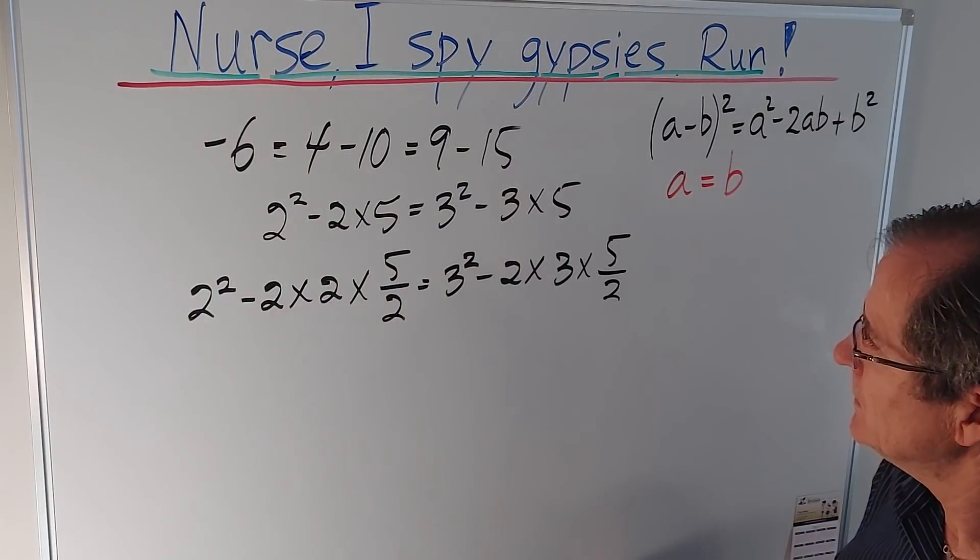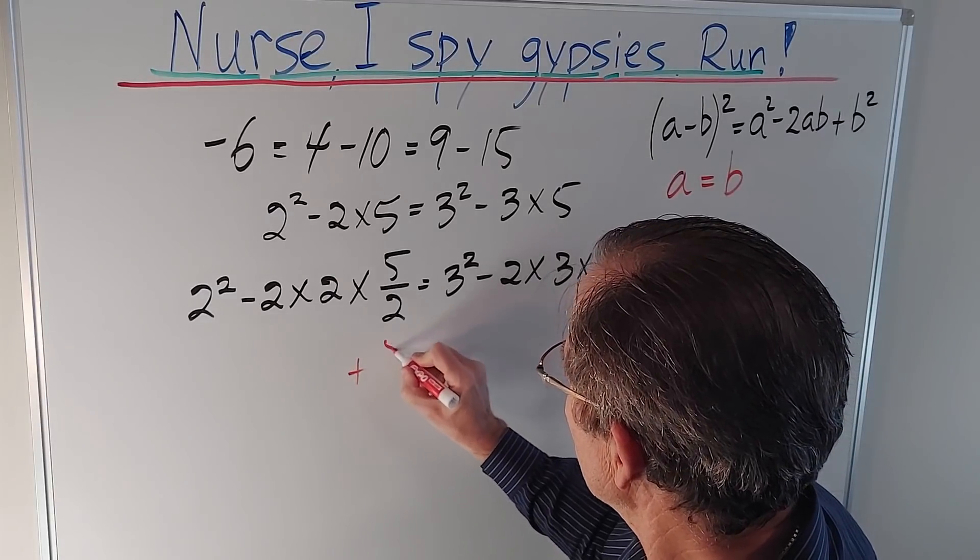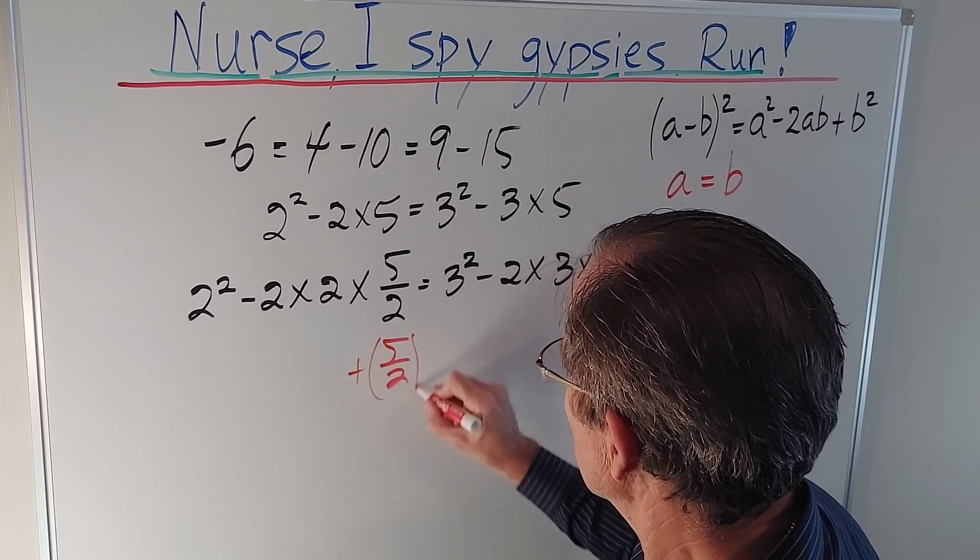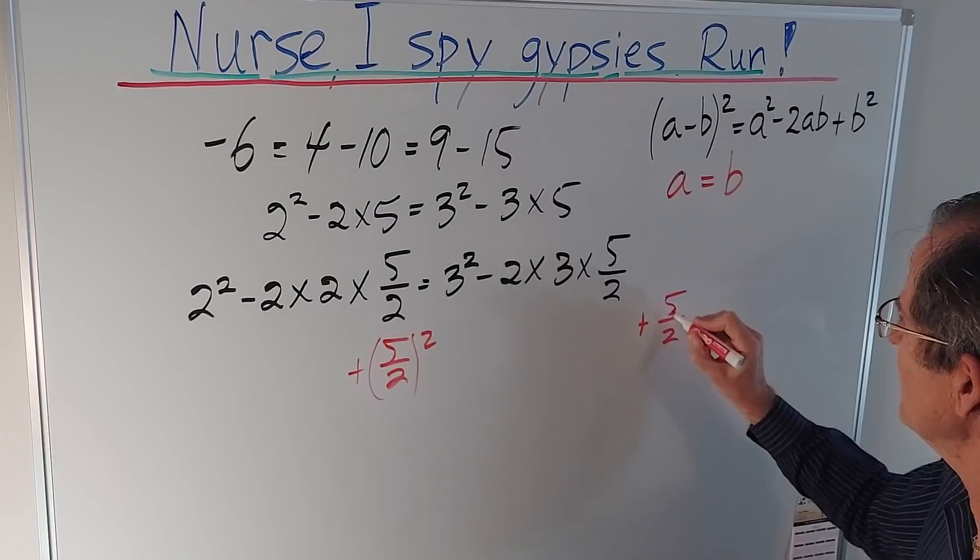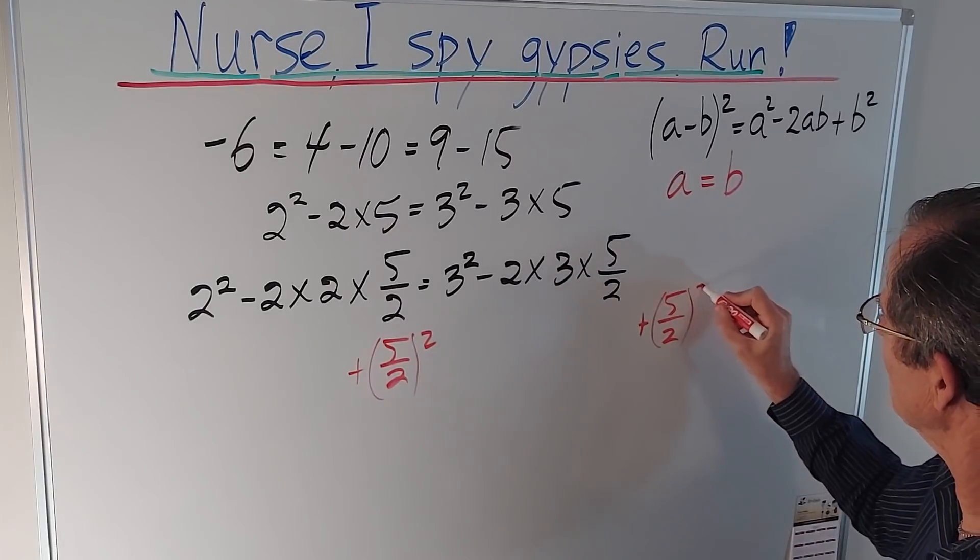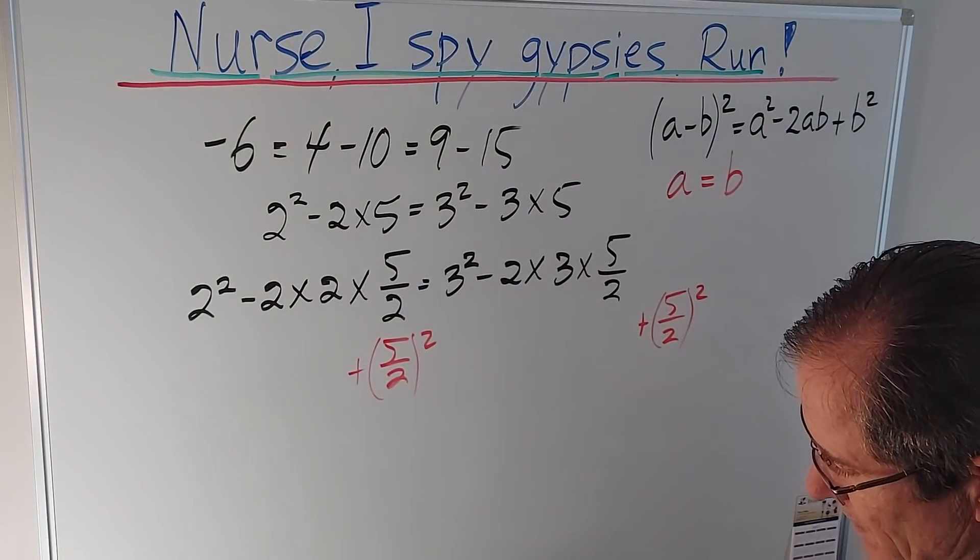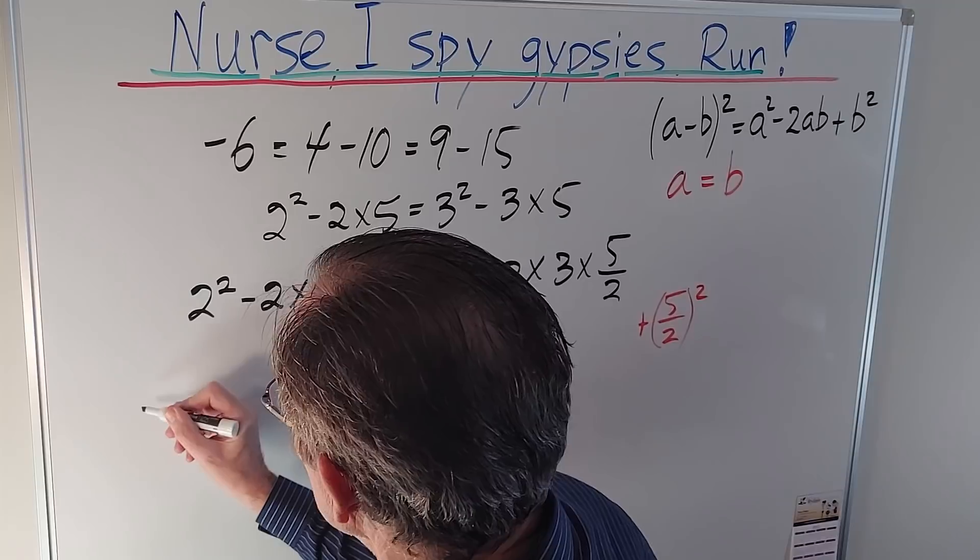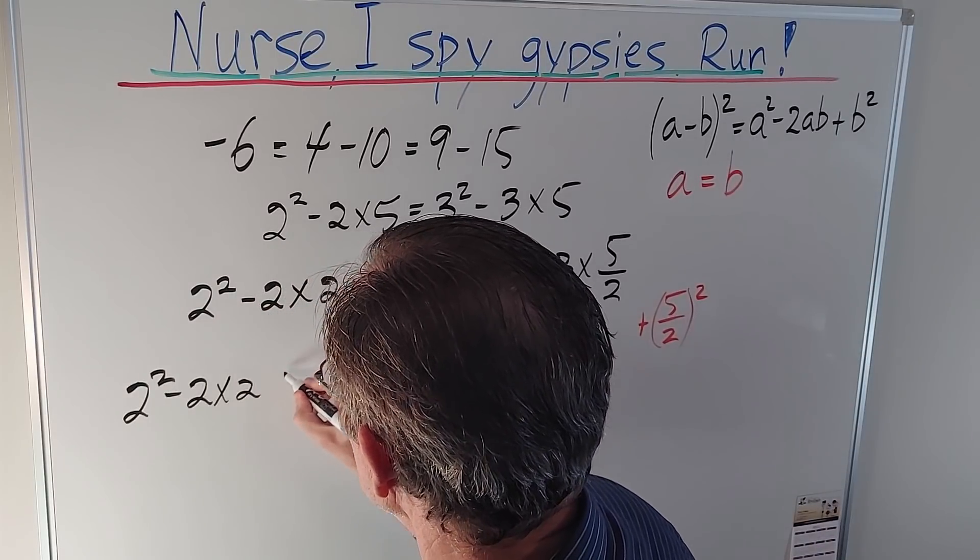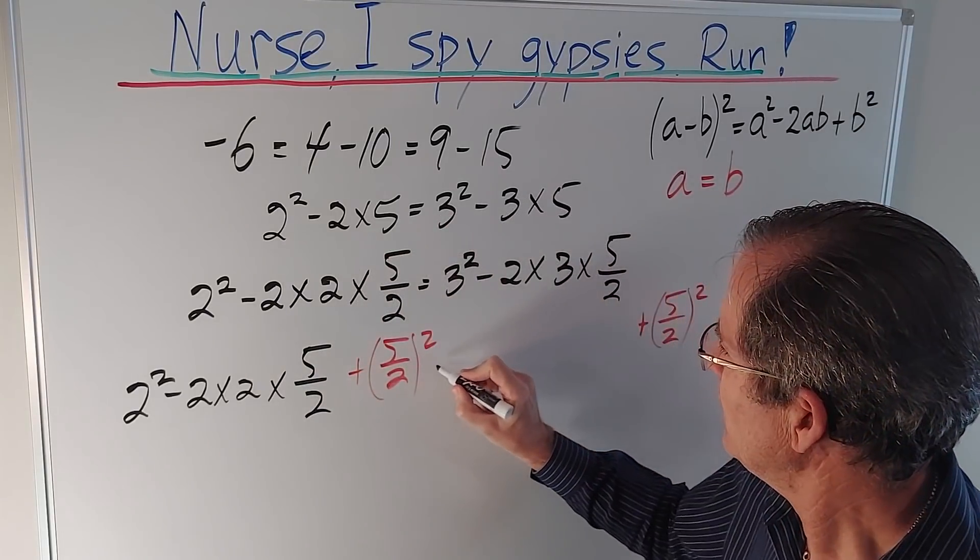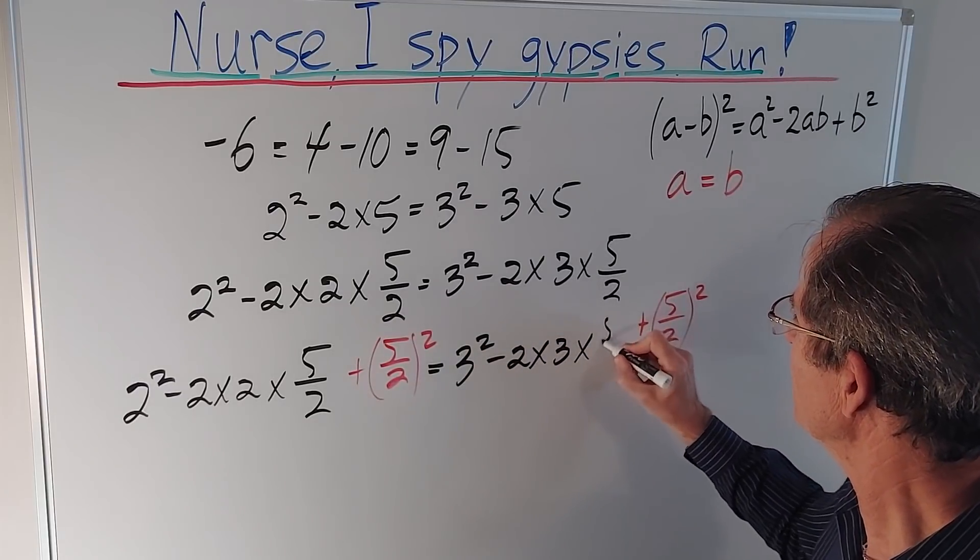And now I'm going to add to both sides. So this is 5 over 2 squared minus 2 times 3 times 5 over 2.